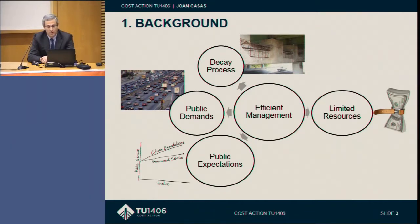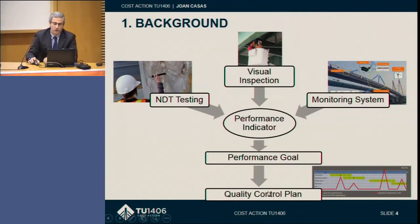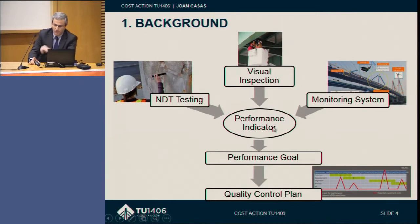The only way to manage within all these boundaries is to have a good, efficient management of the infrastructure. This management is mainly given by what we call quality control, which serves society's needs. Before writing this quality control, we need some kind of testing, visual inspection, and monitoring. All this is reflected in what we call a performance indicator, which is one of the main subjects of our COST action, jointly with performance goals.